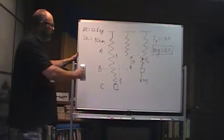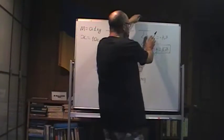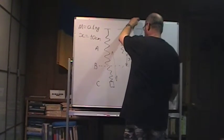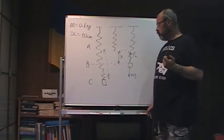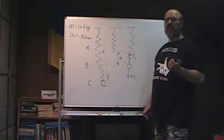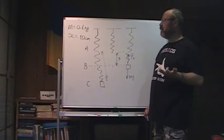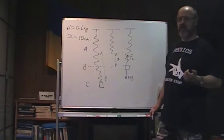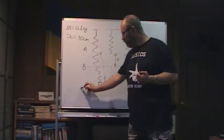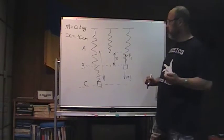At point A system has just gravitational potential energy. And with gravitational potential energy, we always need to choose what will take 0. From where we will measure H in the formula Mgh. So let's take this level as 0.